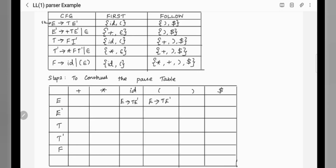For E dash, FIRST(E dash) includes plus and epsilon. For the plus column, we put E dash tends to plus T E dash. Since epsilon is in FIRST(E dash), we look at FOLLOW(E dash), which is close brackets and dollar. So in the close brackets and dollar columns, we put E dash tends to epsilon.